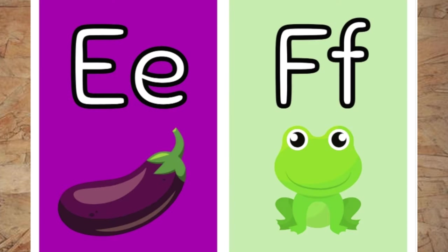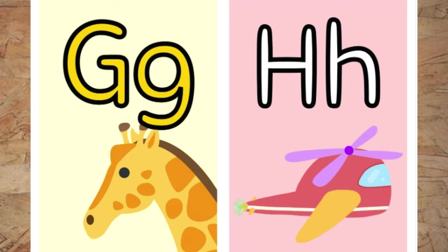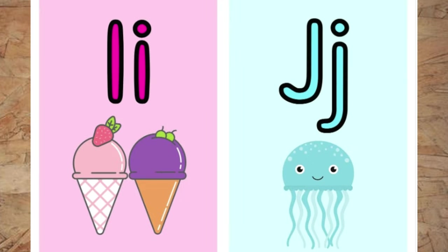E is for eggplant. F is for frog. G is for giraffe. H is for helicopter.